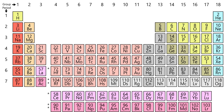Moving left to right across a period, atomic radius usually decreases. This occurs because each successive element has an added proton and electron, which causes the electron to be drawn closer to the nucleus. This decrease in atomic radius also causes the ionization energy to increase when moving from left to right across a period. Electronegativity increases in the same manner as ionization energy because of the pull exerted on the electrons by the nucleus. Electron affinity also shows a slight trend across a period; metals on the left side of a period generally have a lower electron affinity than nonmetals on the right side, with the exception of the noble gases.